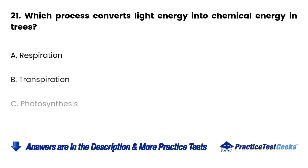Question 21: Which process converts light energy into chemical energy in trees? a. Respiration. b. Transpiration. c. Photosynthesis. d. Oxidation.